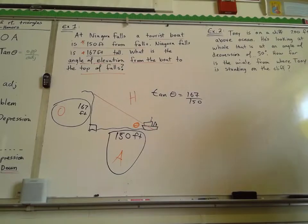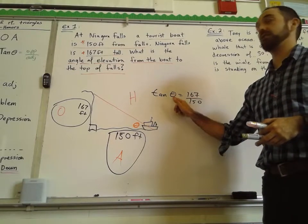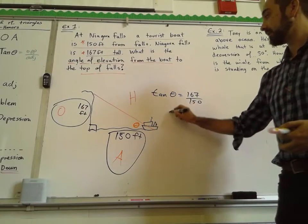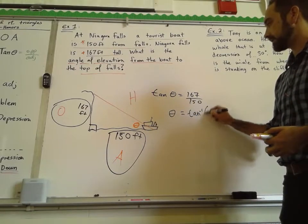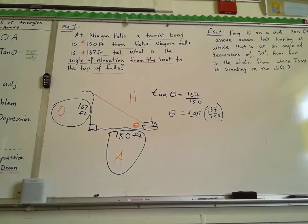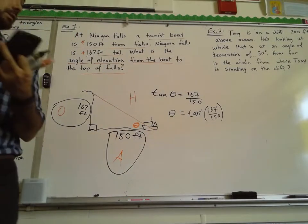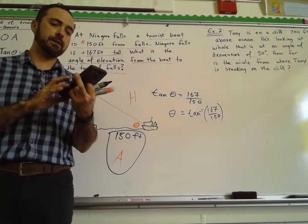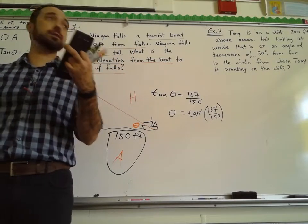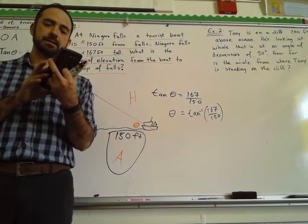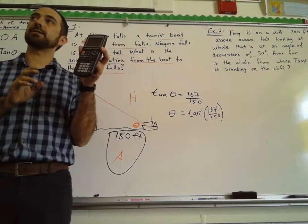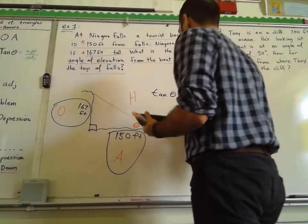Remember, these trig functions — you could take the tangent if you knew the angle. We don't know theta, so instead of taking the tangent, how can I find theta? I'm going to take the inverse of this fraction. We're going to use the second function. Go ahead and first do 167 divided by 150 — you get 1.1133. We don't want to lose all those digits, so do the inverse tangent: second tangent, and find that answer. 48.06. Theta is 48.07 degrees.